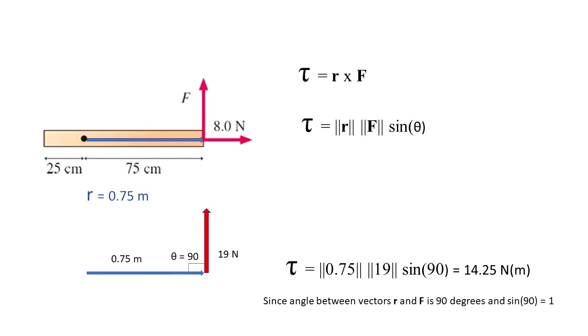So if we use the formula 0.75 times 19 and sine of 90 is equal to 1, by computing the formula for torque, we get that torque is equal to 14.25 Nm.